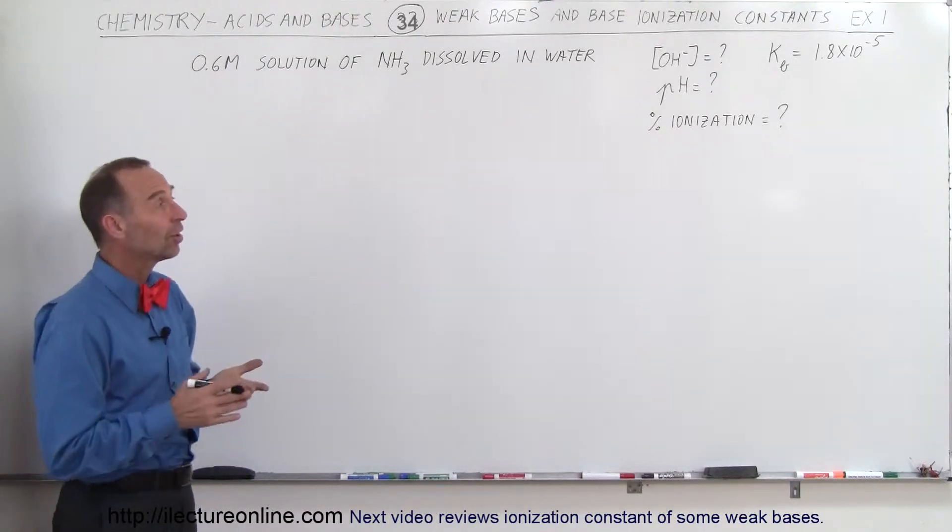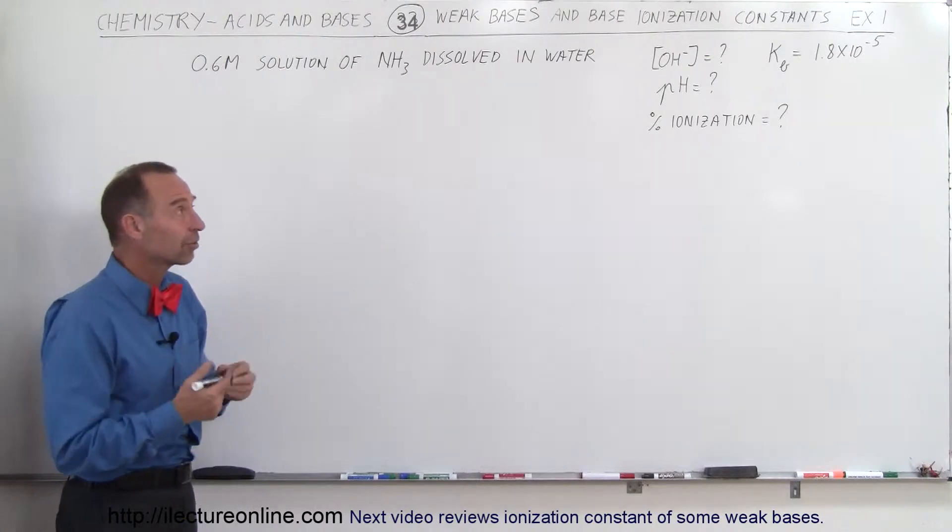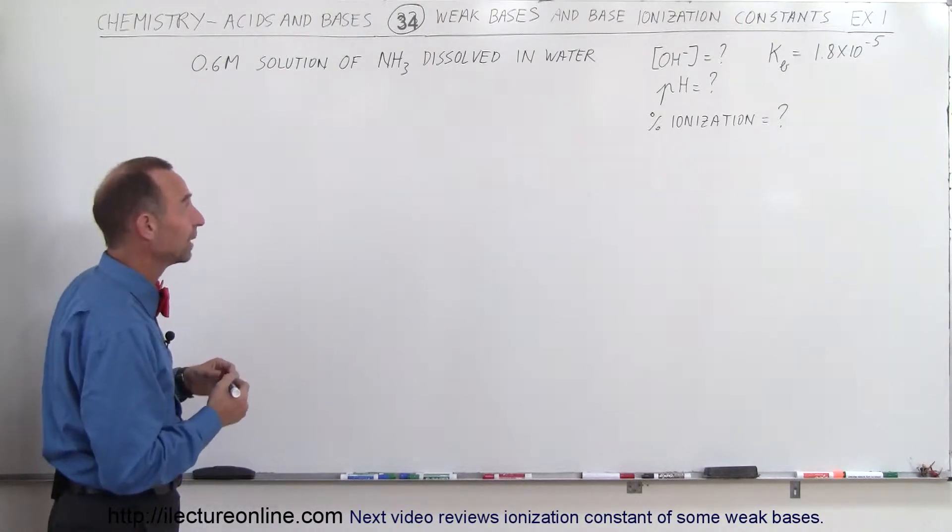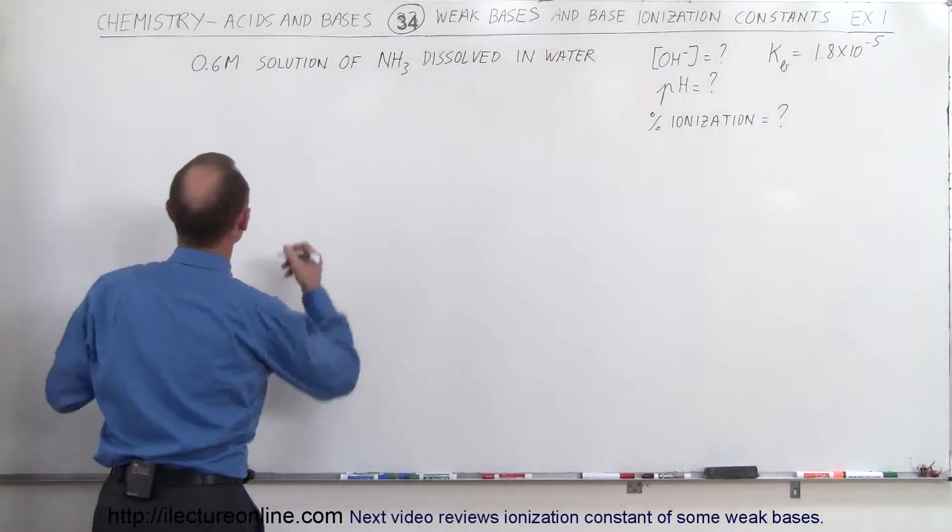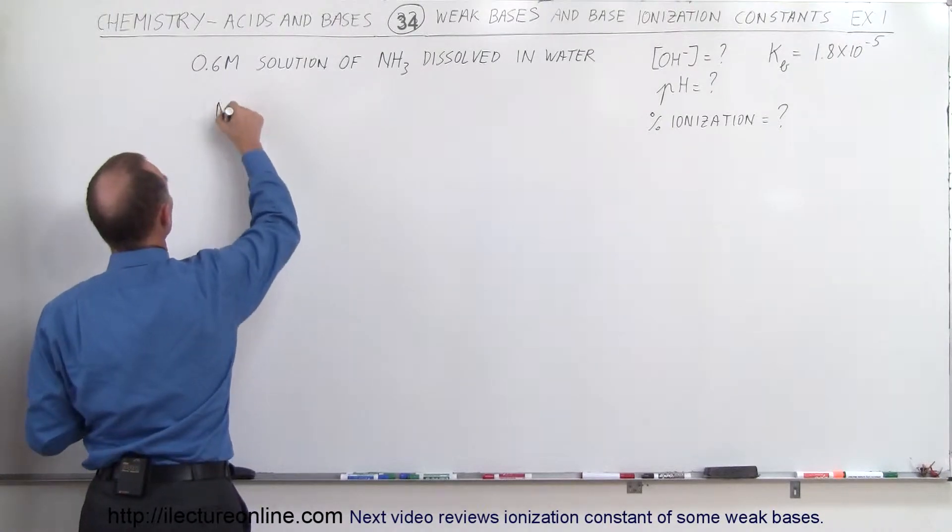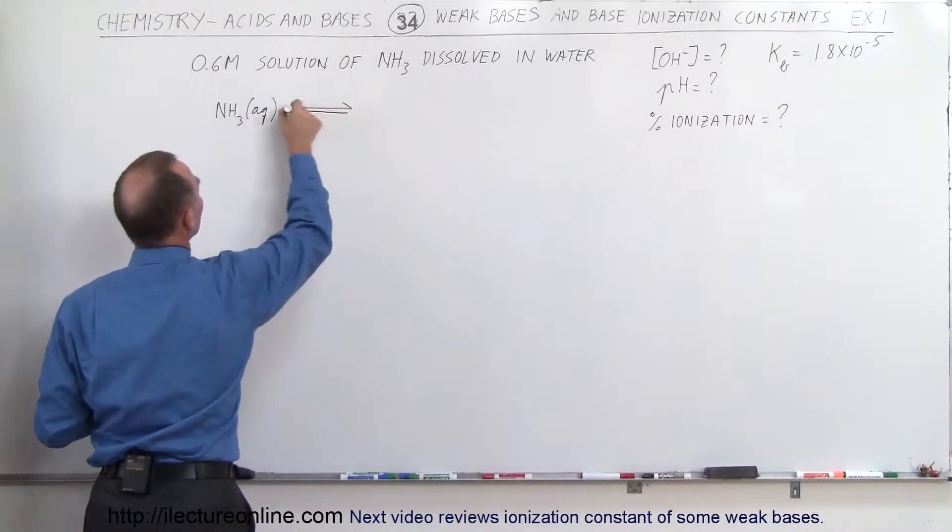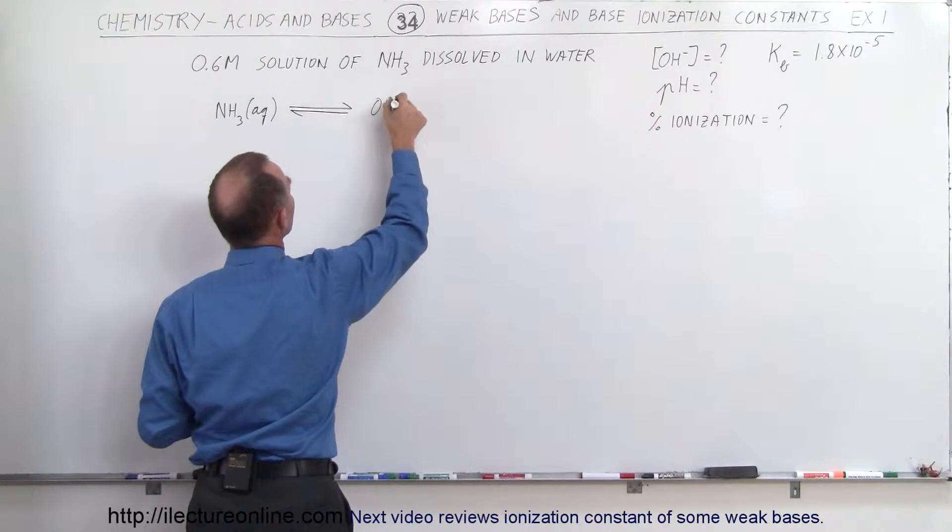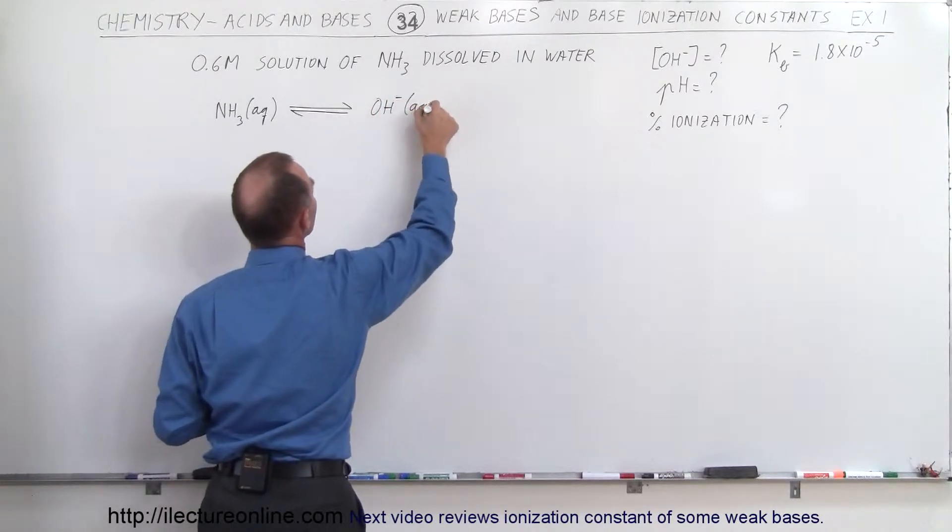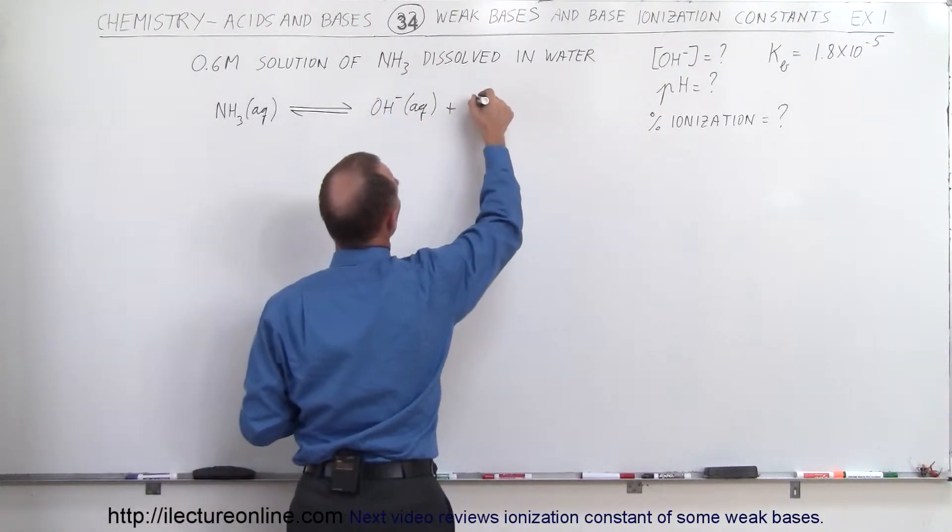So ammonia is a weak base, so let's see what the final concentration is of the hydroxide ion. First we want to put up an equation, so we have the ammonium dissolved in water and partially ionizing to form the hydroxide ion and the conjugate acid.